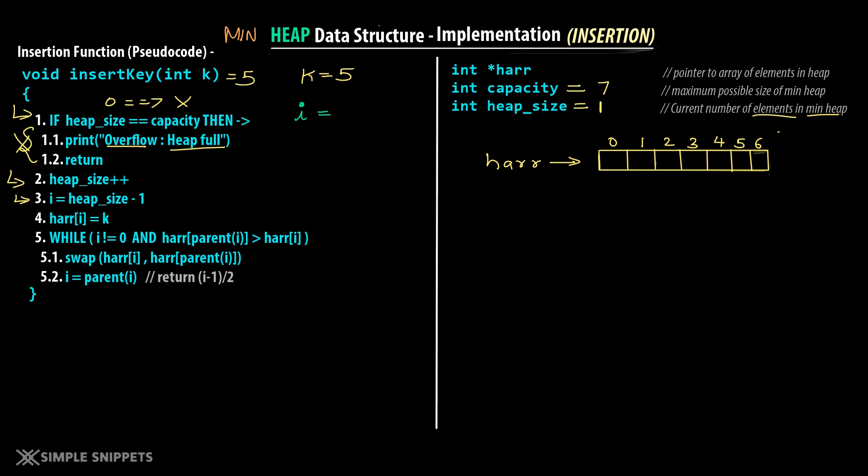This while loop only executes when swapping is needed. If the inserted value were smaller than 5, we would need swapping — which we will see now. Let's insert one more value: k equals 4.